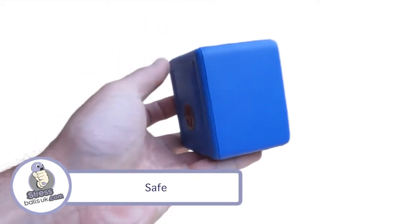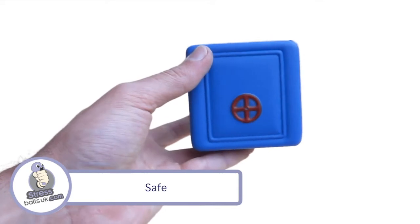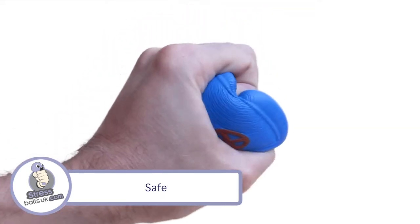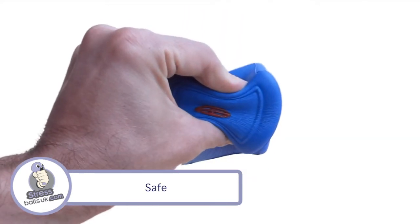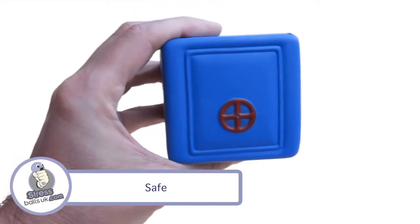It has a print area on the front of 35 by 20mm, and we can also print on all four sides, that print area being 45mm by 45. Great for any of those finance or banking promotions and giveaways you may be doing.